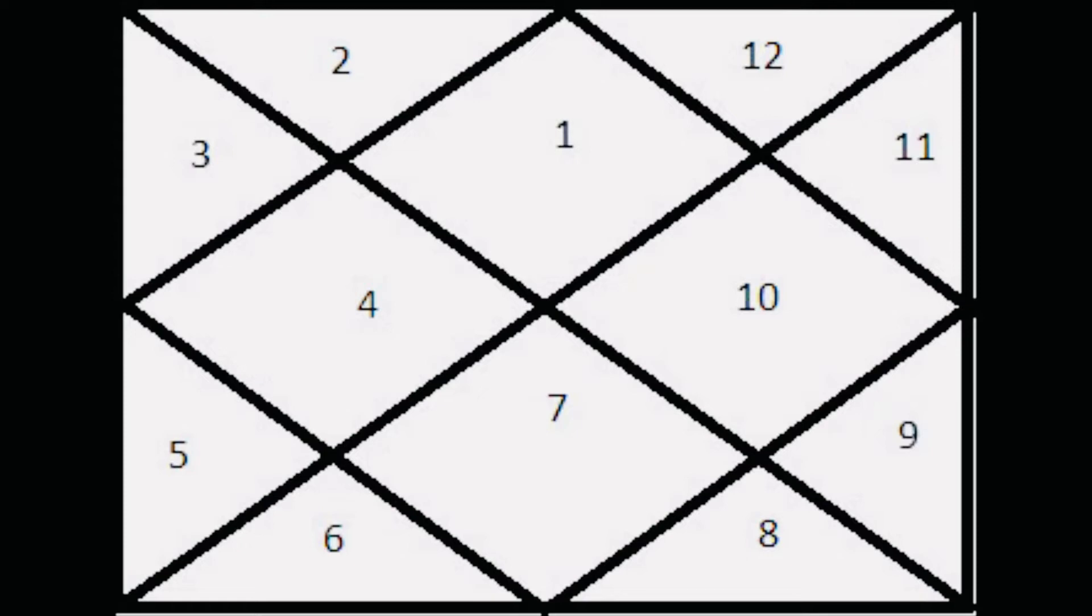As of now just understand there are 12 houses and these 12 houses are permanent, they never change. Irrespective of the fact whether any number is written, for example in this chart number one is written, so instead of number one if it's written number seven, still that would be called first house.